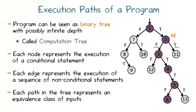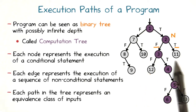Each path in the computation tree represents an equivalence class of inputs. If two inputs lead to the same set of branch points and statements executed, we consider those inputs equivalent. The goal of dynamic symbolic execution is to systematically generate non-equivalent inputs — inputs that lead the program's execution along different paths. We have numbered the nodes in this example tree in a depth-first ordering.